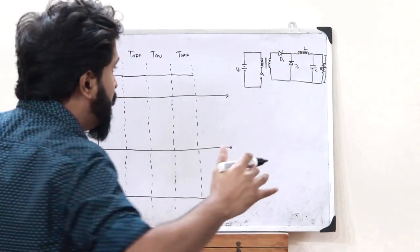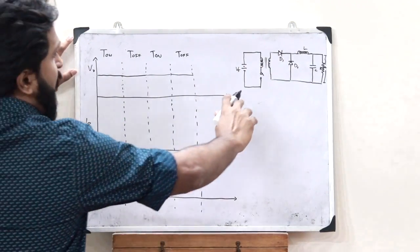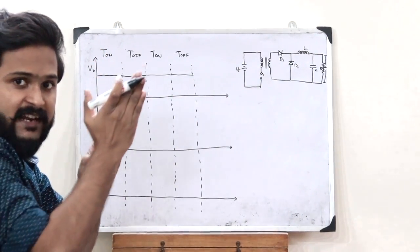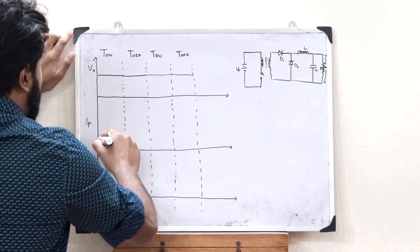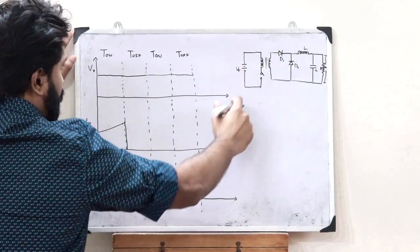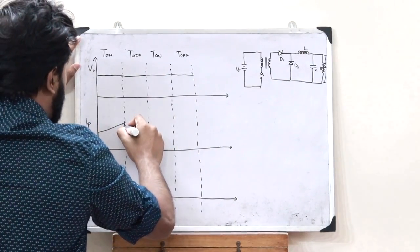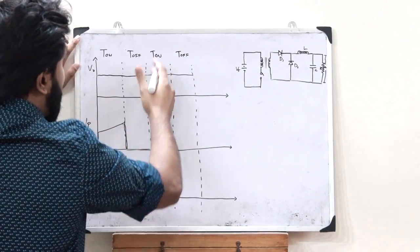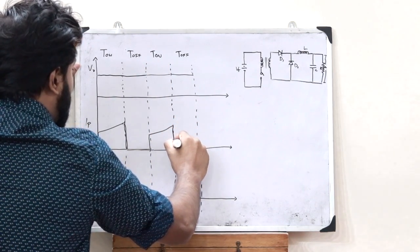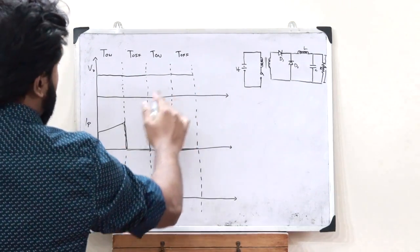Next, let us see the waveform for the primary current IP. As the switch is turned on, the primary current starts increasing from a minimum value to a maximum value. When the switch is turned off, no primary current flows because the circuit is incomplete, so we get zero primary current. Again when the switch is turned on, the primary current increases, and when turned off, there is no primary current. This is the waveform for the primary current.